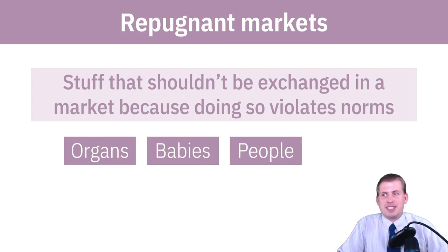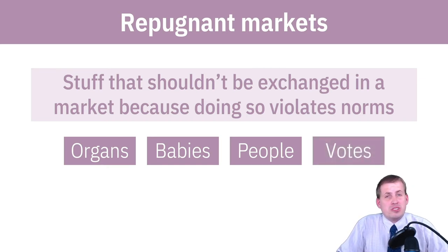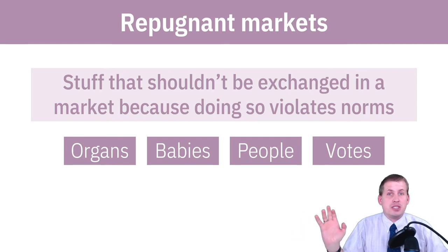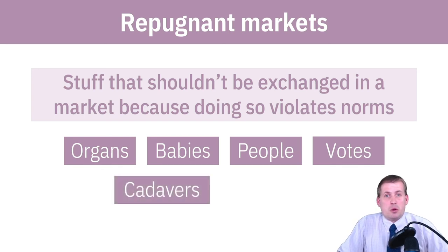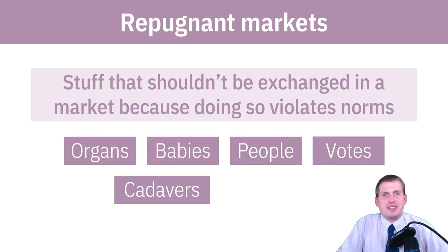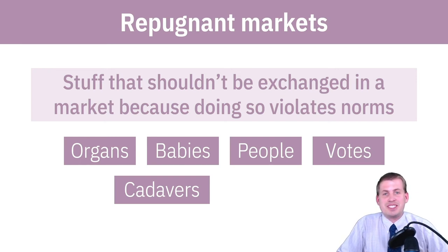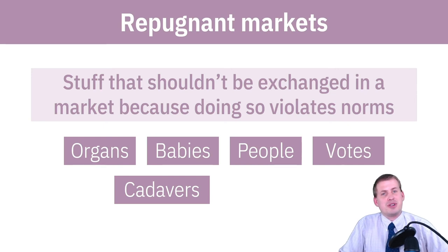We don't believe in slavery, so we don't have a market for people — we've collectively decided that's bad. Votes are another example: theoretically you could buy and sell votes, but as a society we've decided that is unacceptable. Cadavers are another repugnant market — bodies are donated to science and medical schools for dissection, but we don't sell dead bodies. If we did, it would turn into a bizarre market of raiding cemeteries, which actually happened in the late 1800s when doctors needed bodies for surgical techniques and were buying them on the black market.